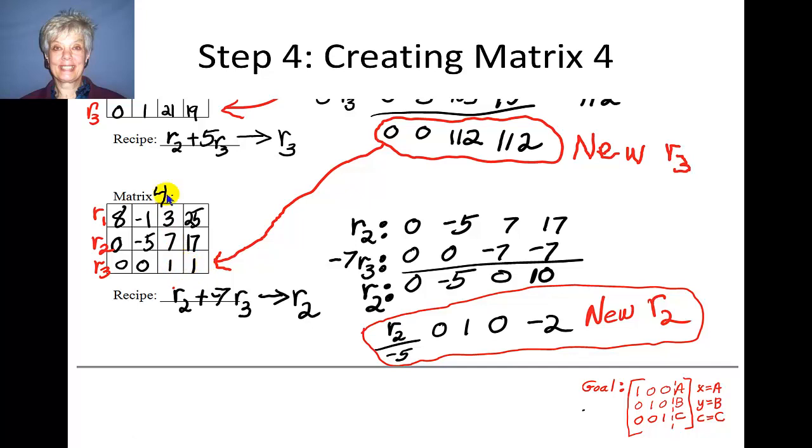Now, my next goal is to put a 0 in this position in row 2 where the 7 is. So, to do this, I will add row 2 and negative 7 times row 3, and put the result into row 2. So, let's see, when I add row 2 to negative 7 times row 3, this is what I get, and when I add those two together, I'll get 0, negative 5, 0, and 10. And look at this. I can divide every number in row 2, in the new row 2, by negative 5, so that I'll get 0, 1, 0, negative 2, and this will be my new row 2, which I will put in row 2.